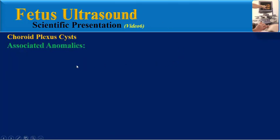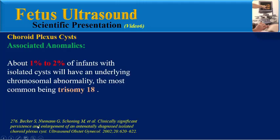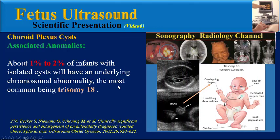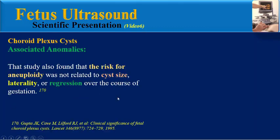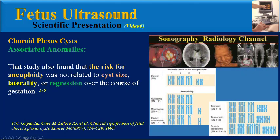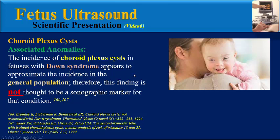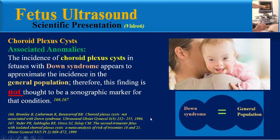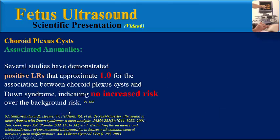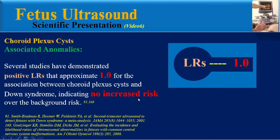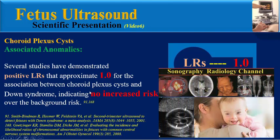Are there any associated anomalies with choroid plexus cysts? About 1 to 2% of infants with isolated cysts will have an underlying chromosomal abnormality, the most common being trisomy 18. The risk for aneuploidy was not related to cyst size, laterality, or regression over the course of gestation. The incidence of choroid plexus cysts in fetuses with Down syndrome approximates the incidence in the general population; therefore, this finding is not thought to be a sonographic marker for Down syndrome.